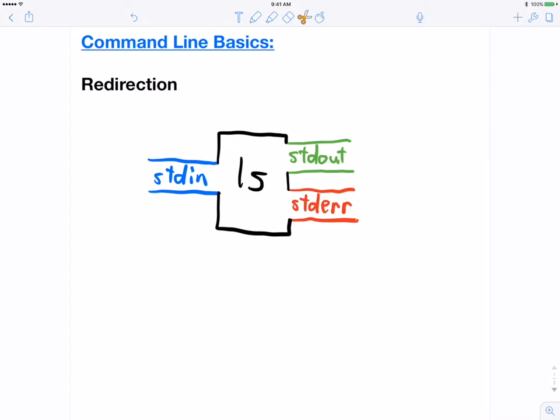Input or Output Redirection allows us to change where output goes and where input comes from. For example, Standard Output from LS can be redirected to a file on disk.